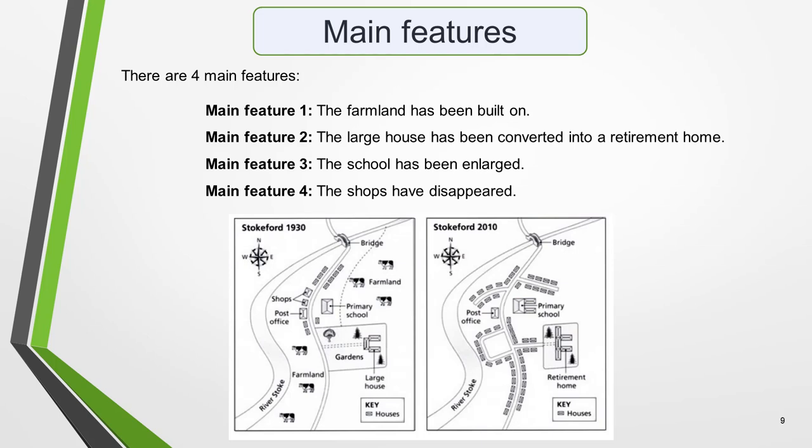Main feature one: the farmland has been built on. Main feature two: the large house has been converted into a retirement home. Main feature three: the school has been enlarged. And main feature four: the shops have disappeared. The key features you select will be the starting point for your map essay, and you will then go on to add more detail later. However, with just 20 minutes allowed for Task 1 and a requirement of only 150 words, you won't be able to include many details.